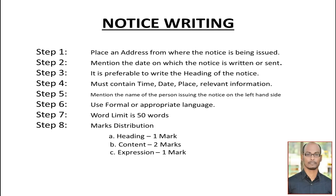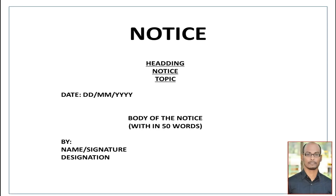This is the format of notice writing. The heading comes at the top, then you write the word 'Notice', followed by the topic. The date follows the day-month-year format. The body of the notice must be written within 50 words in American format — that means you start writing the body exactly below where you started the date, leaving one line gap. After completing the body, leave one more line gap, then write 'By' followed by the name and designation of the issuing authority.